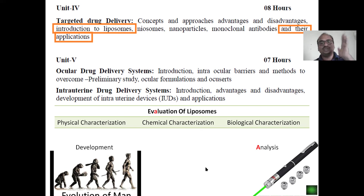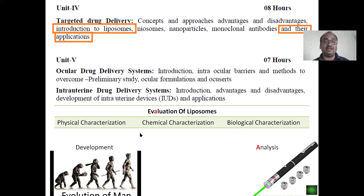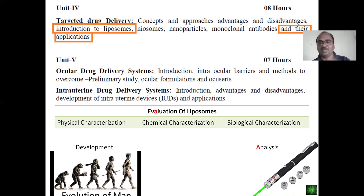There are mainly three types of characteristics you have to evaluate in the case of liposomes: physical characterization, chemical characterization, and biological characterization. Biological characterization tells whether liposomes are toxic or harmful to the patient. Chemical tells what phospholipids, cholesterol, and drug content are present. These three evaluations are very important — you have to write them in the examination.